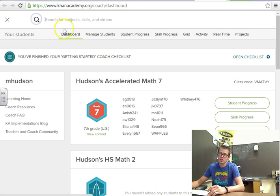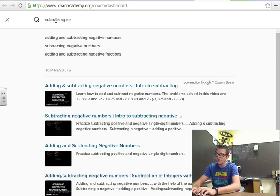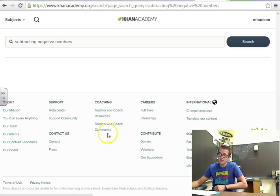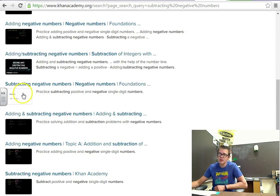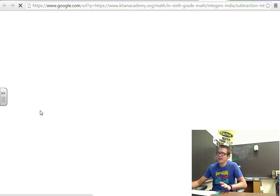So up here in the search bar, students can search for anything. So let's say they wanted to search for subtracting negatives, and it's going to come up automatically already. And then I can go there and see what videos are available to watch, what activities are available to do. So like here's videos, here's activities. So all of that's really great practice work.